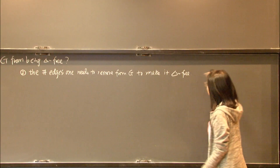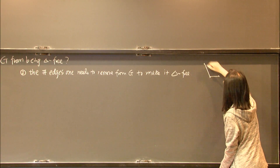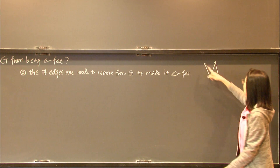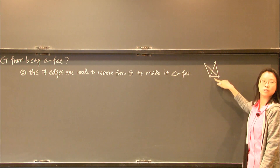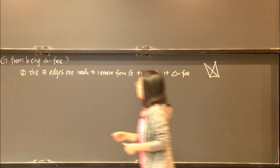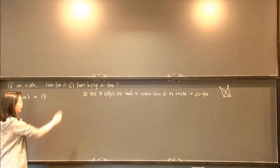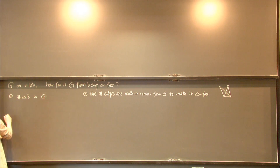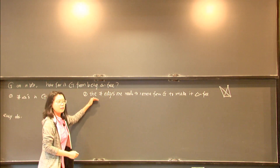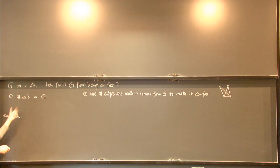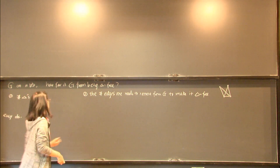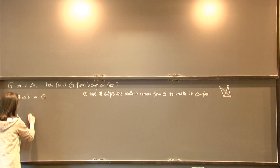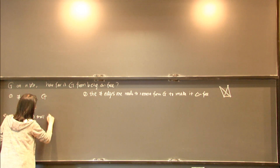For example, I have a graph here on four vertices that has two triangles, and I just need to remove the bottom edge to kill all the triangles. So I'm curious about how these two quantities are related. An easy observation is that if the number of edges I need to remove is small, then the number of triangles in G is small — because every triangle must contain an edge that was removed. So if quantity two is small, this implies quantity one is small.